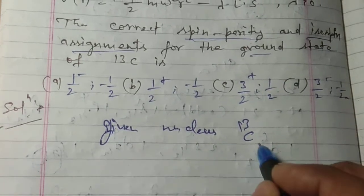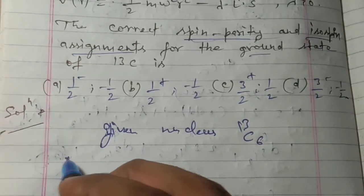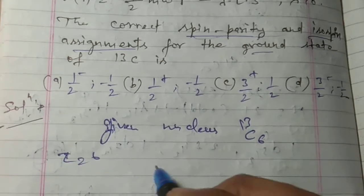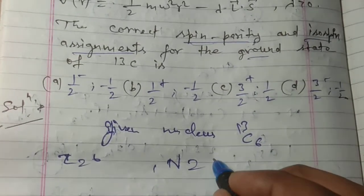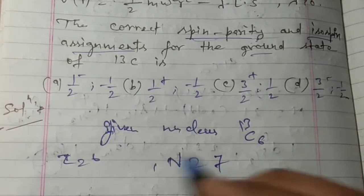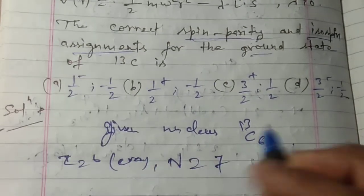Here the number of protons is 6 and neutrons is 7, so this is even and this is odd.